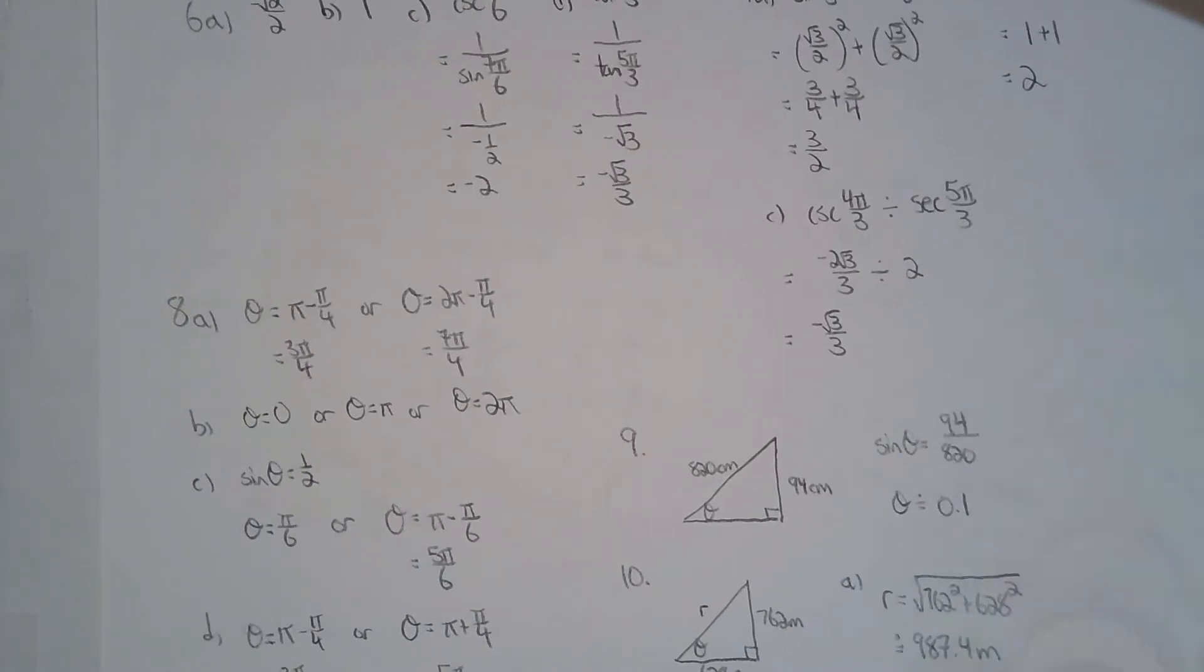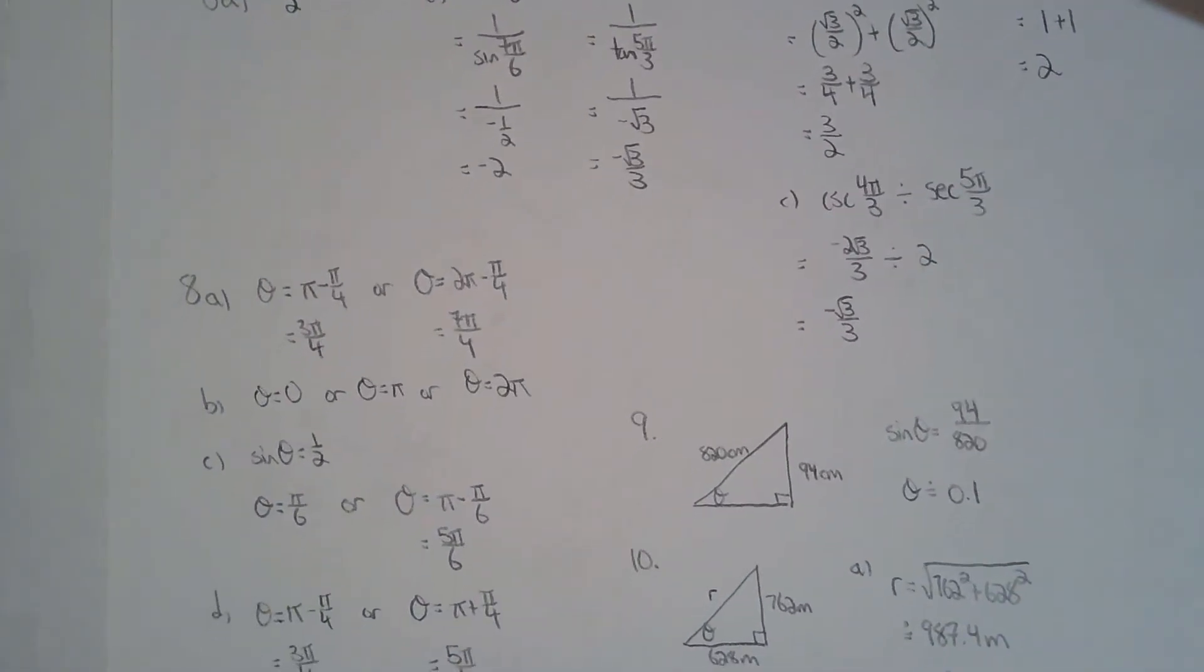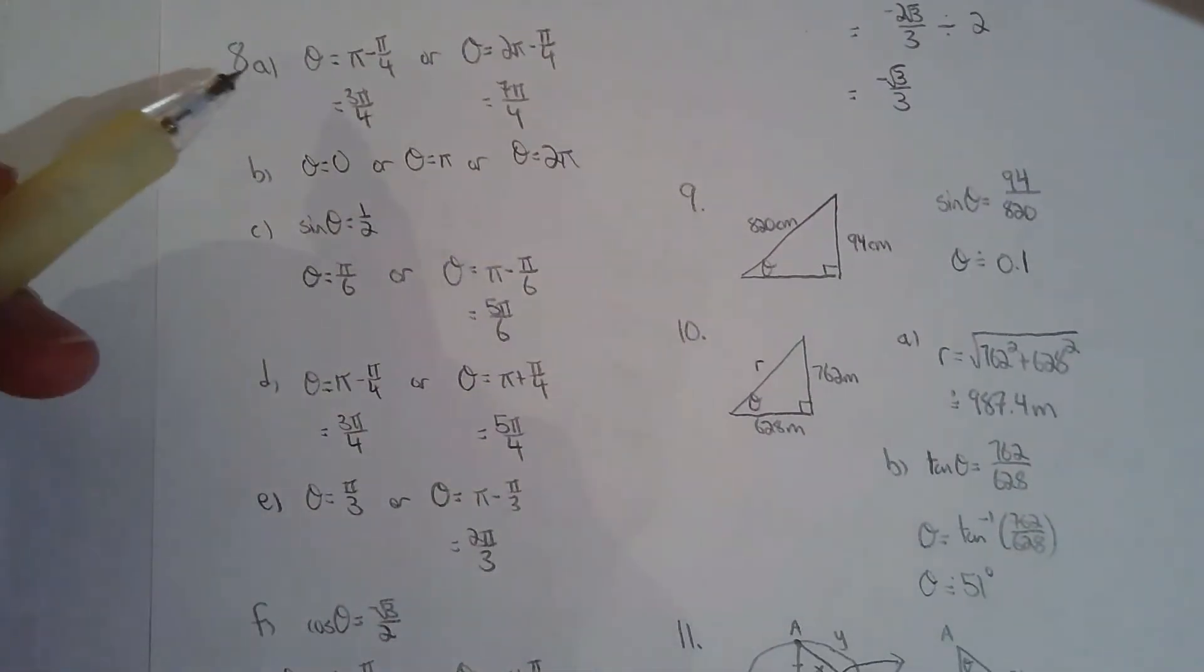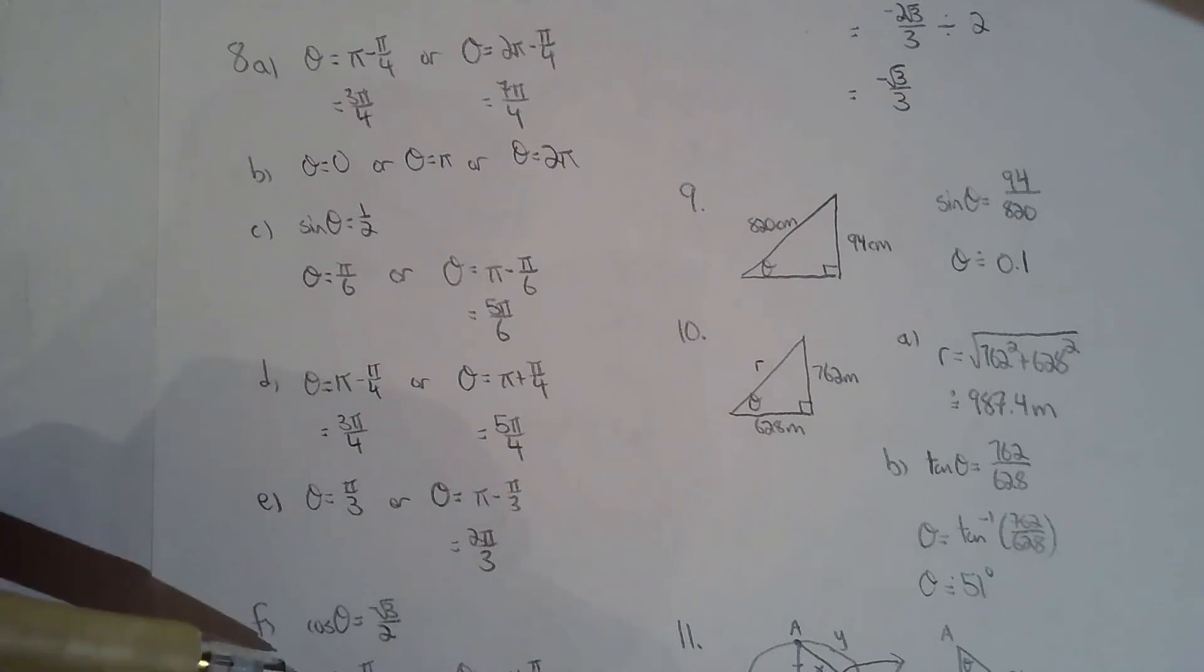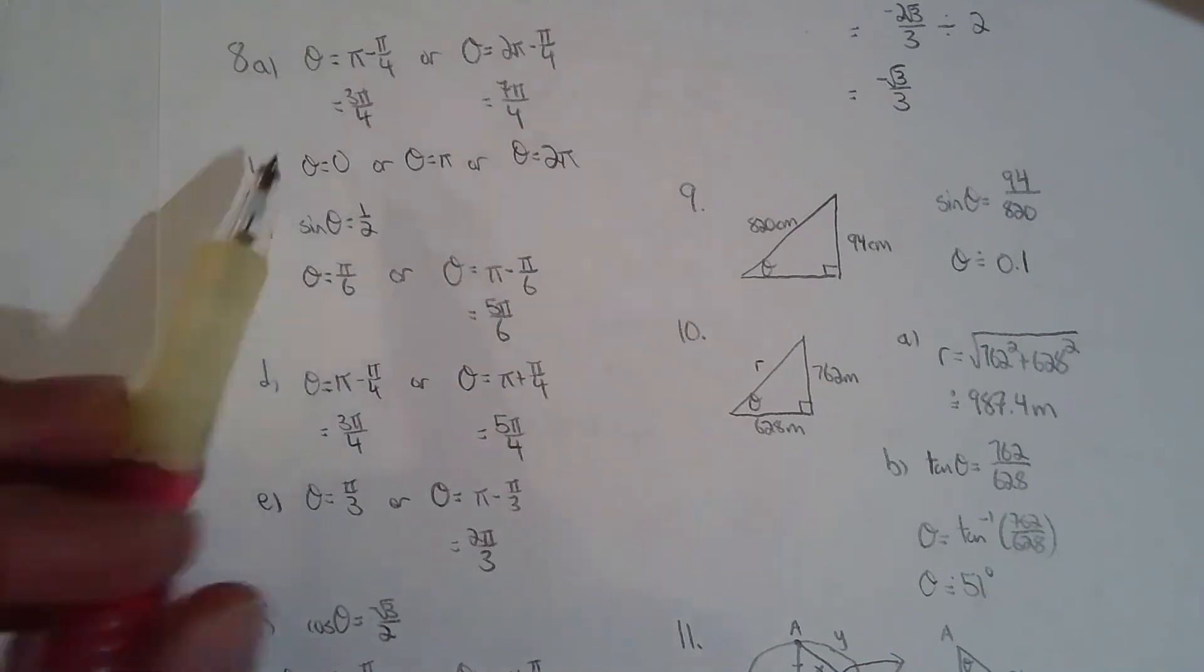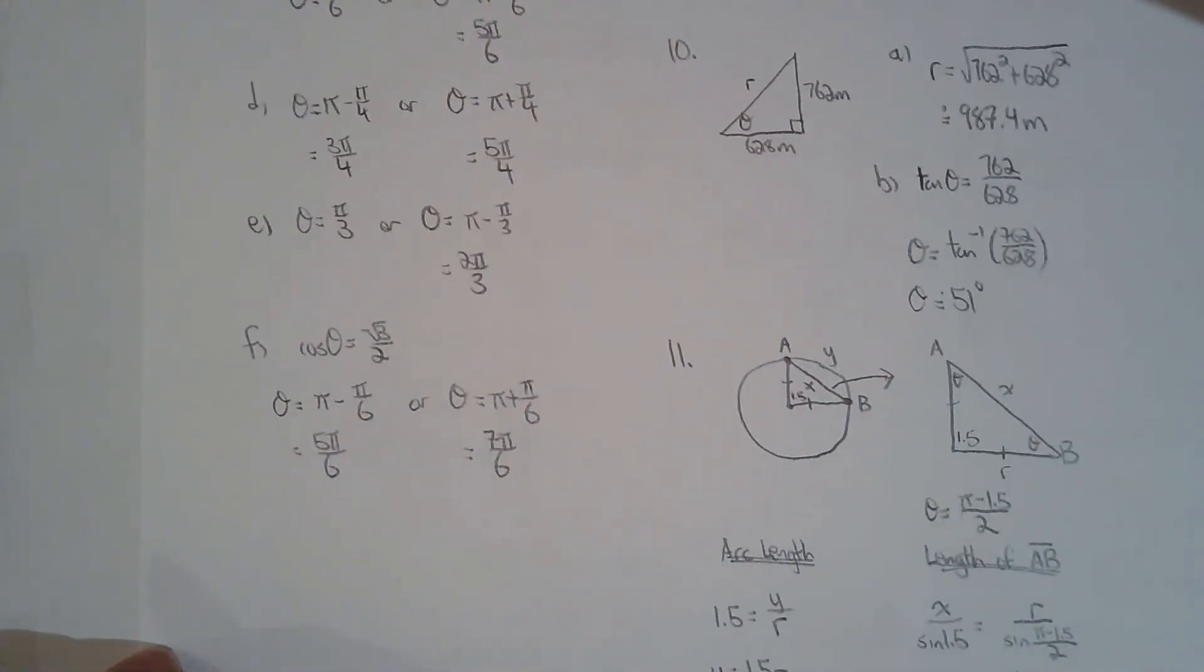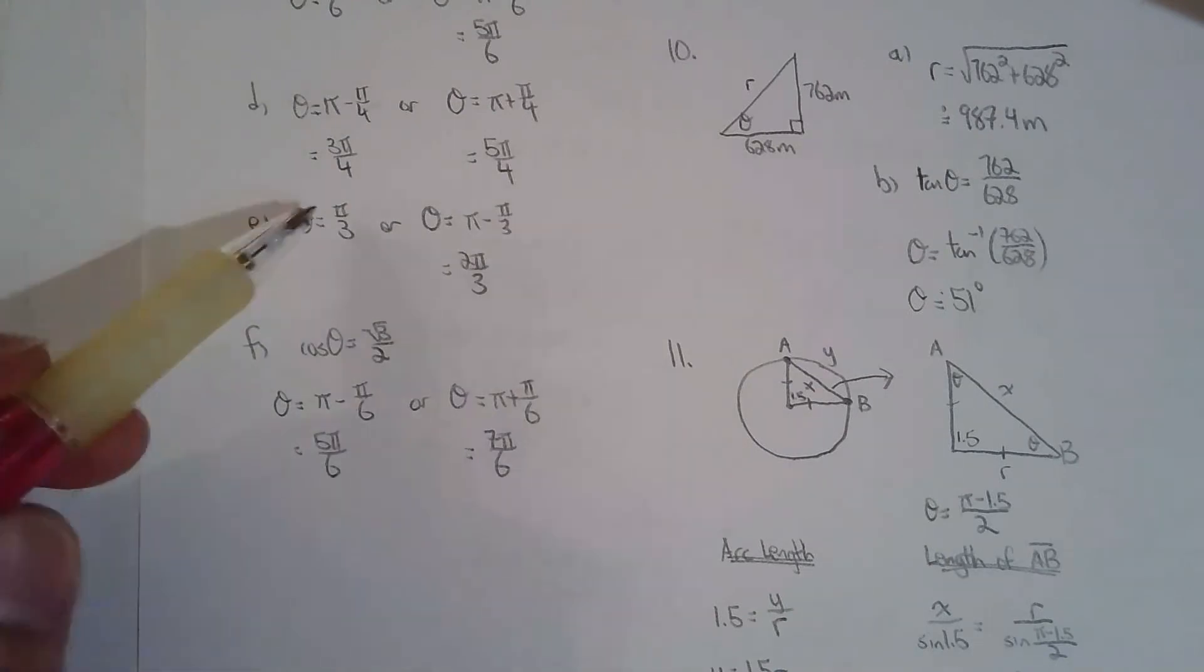For question eight they're basically giving us the ratio and your job is to solve for the angle. To be honest with you for number eight you can really just do what you did in grade eleven, but now you have to express your angles in radians. So eight I would argue is exactly the same as what you did in grade eleven. There's really a two-step process: identify the quadrants, identify the reference angle, and you can solve for the principal angles.